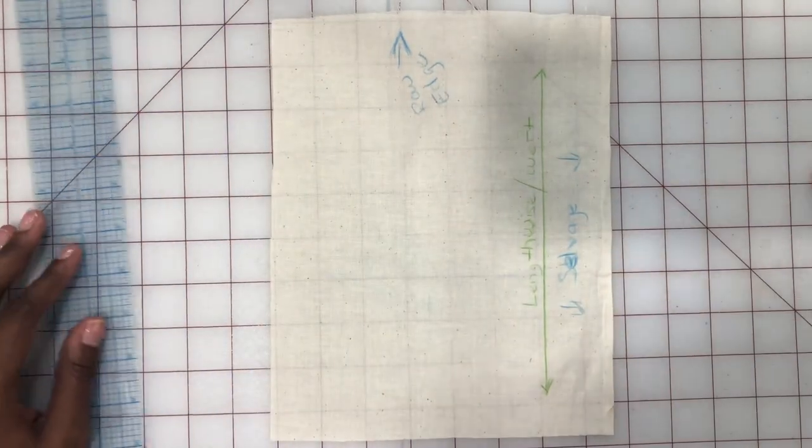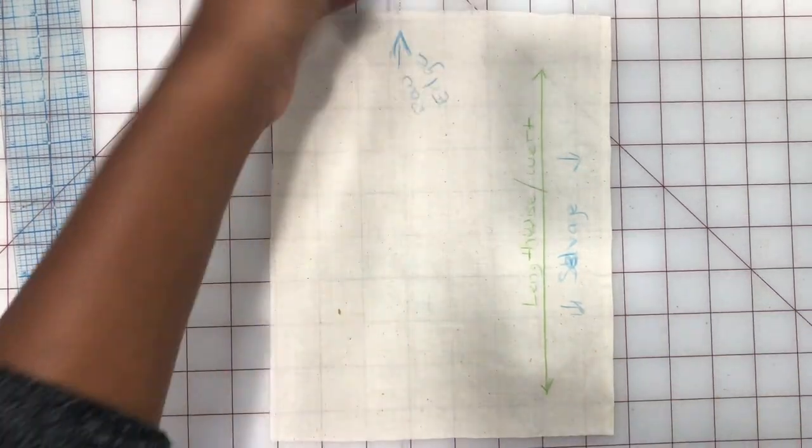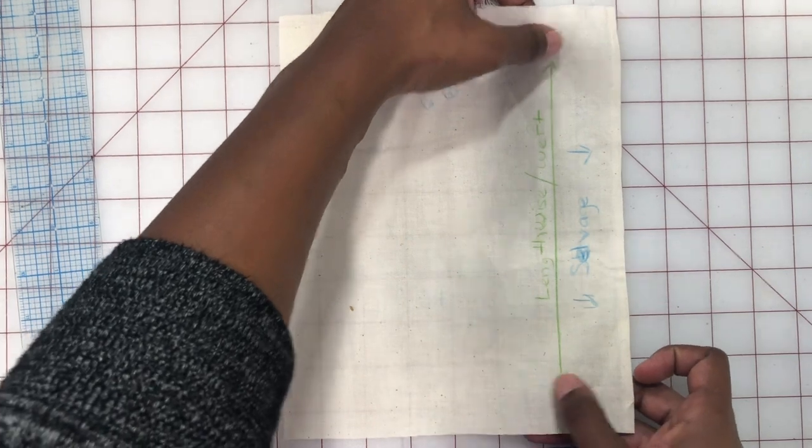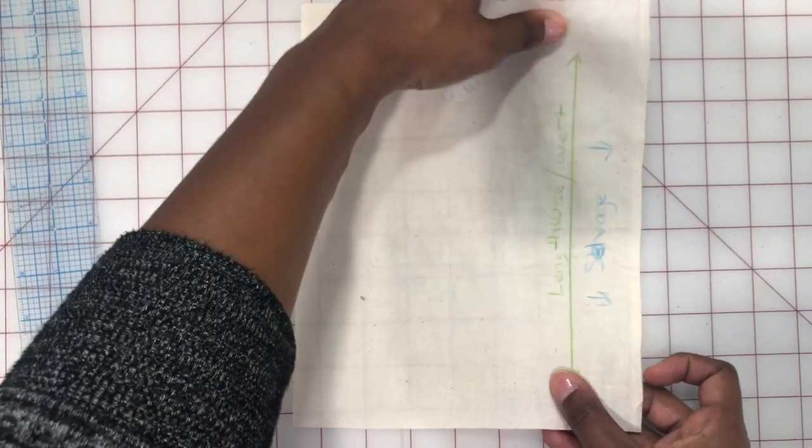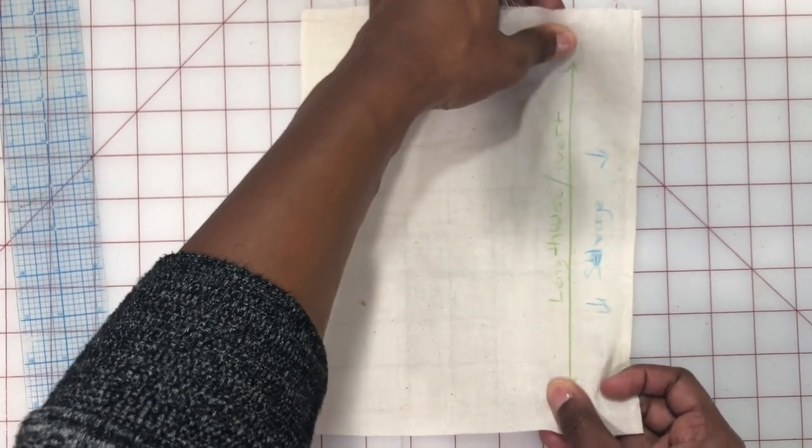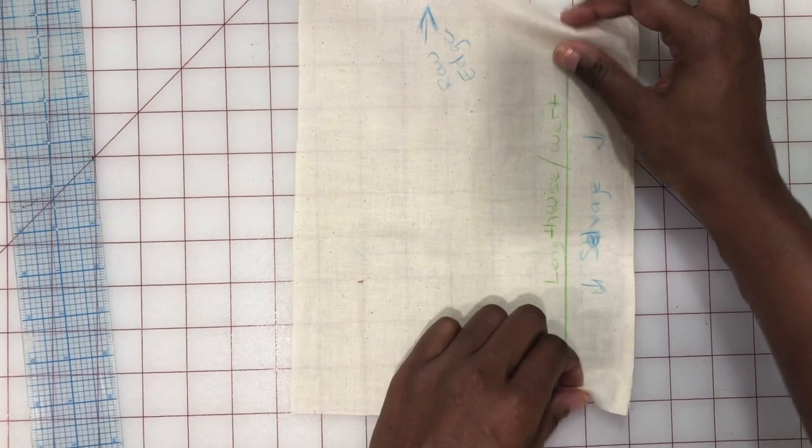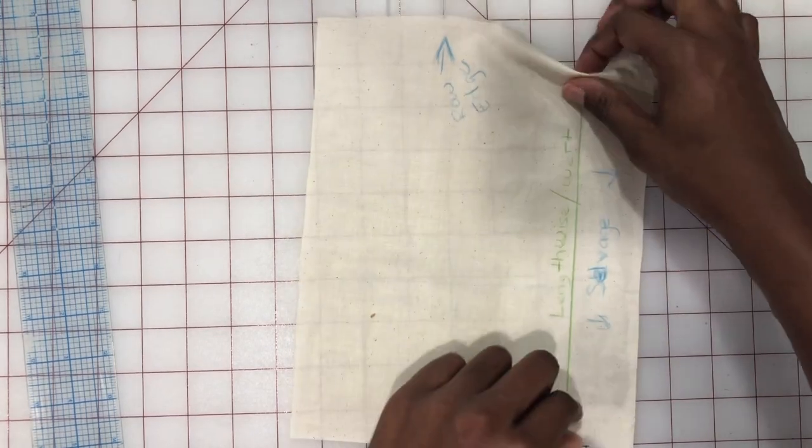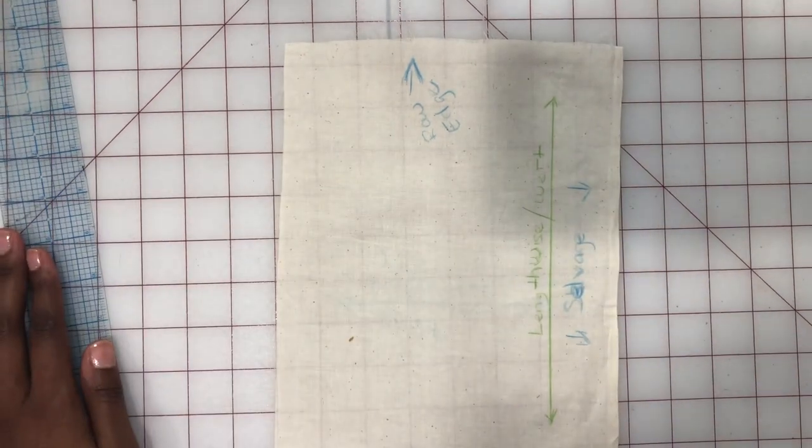So we'll also call that the weft. And another way to sort of identify the lengthwise grain is you do a simple pull test. The lengthwise grain has almost no give, it's usually very taut, and it goes along the center front or the center back of a garment. As you can see, it has almost no give, no stretch.